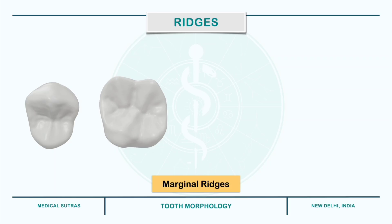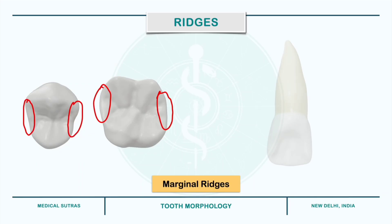We can see the marginal ridges on premolars and molars forming the mesial and distal margins. In the case of anterior teeth, they form the mesial and distal margins of the lingual surface. These are named the mesial marginal ridge and distal marginal ridge.